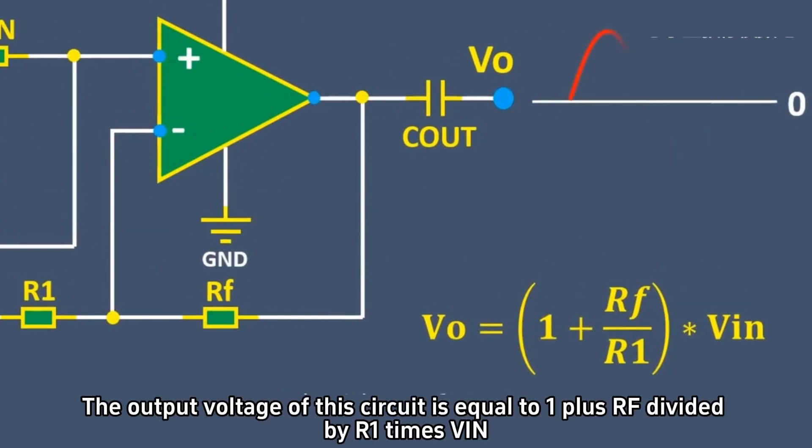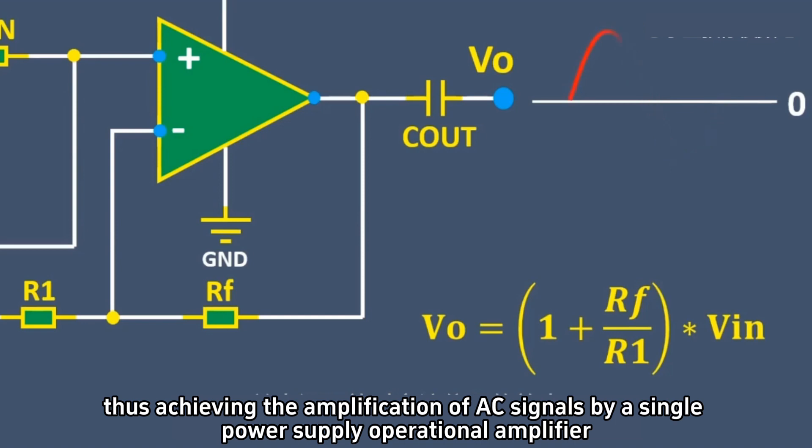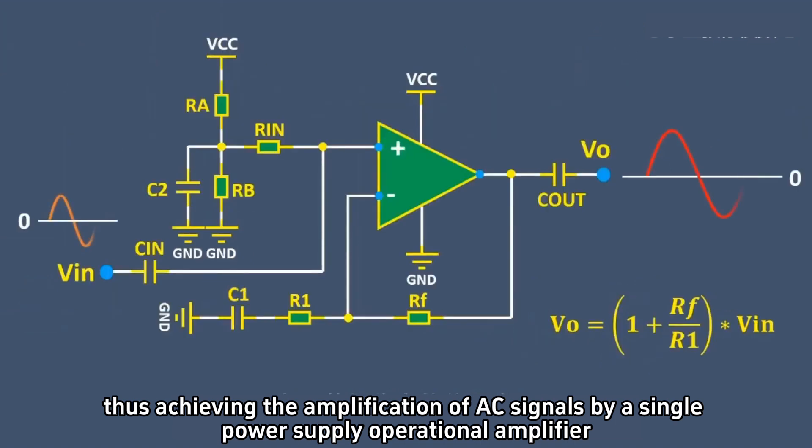The output voltage of this circuit is equal to (1 + Rf/R1) × Vin, thus achieving the amplification of AC signals by a single power supply operational amplifier.